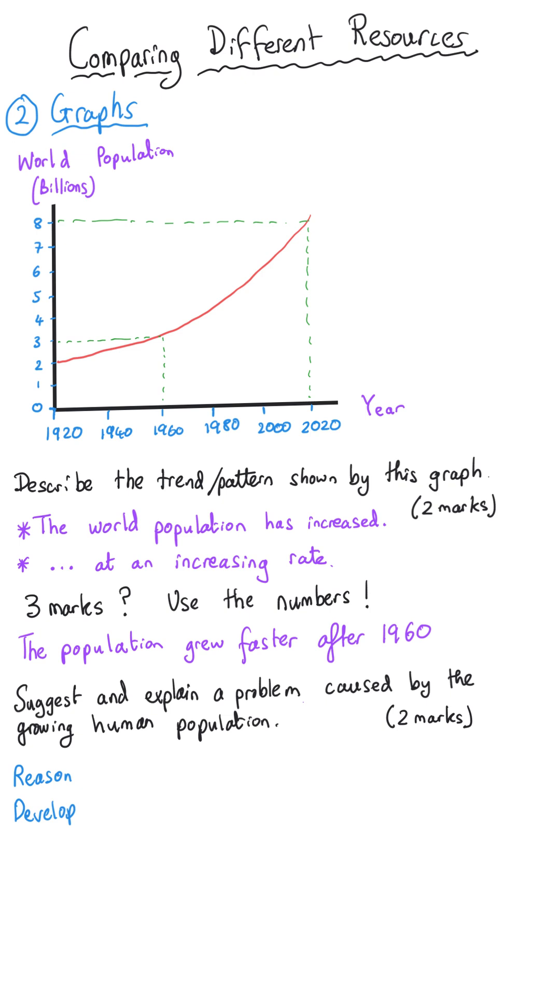And so it might be that we need to feed the population. So the population need to eat. And so that's a problem because it means we need to produce more fertilizers to increase the growth of crops.